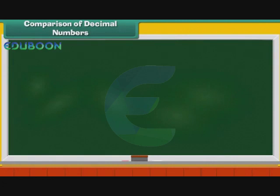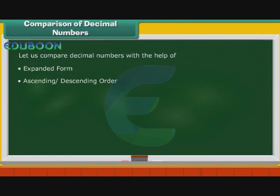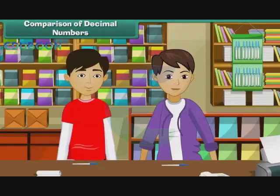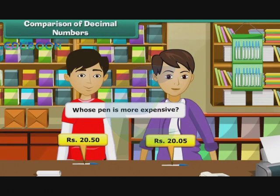Comparison of Decimal Numbers. To understand decimals better, we now compare decimal numbers with the help of expanded form, ascending and descending order. Let us look at some examples. Karan bought a pen for Rs. 20.50, while Ravi bought a pen for Rs. 20.05. Whose pen is more expensive?